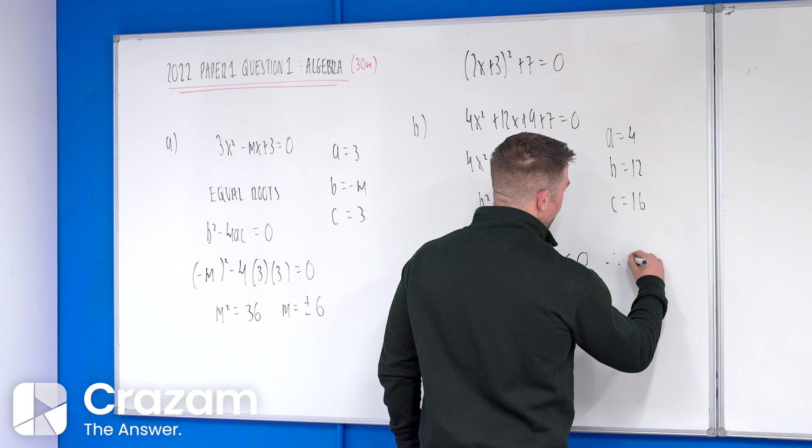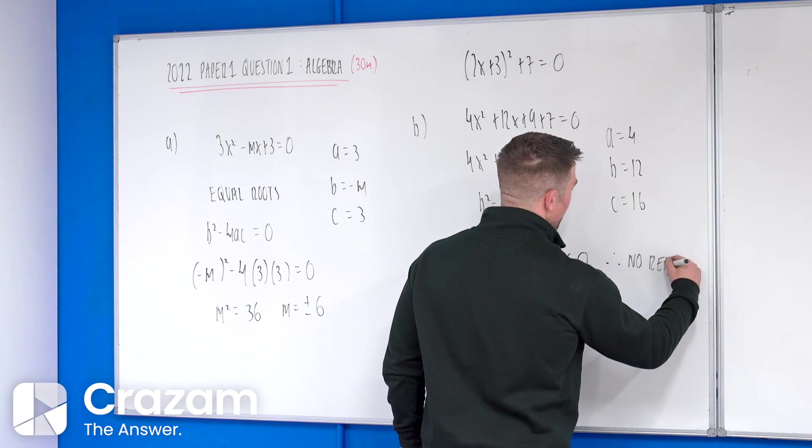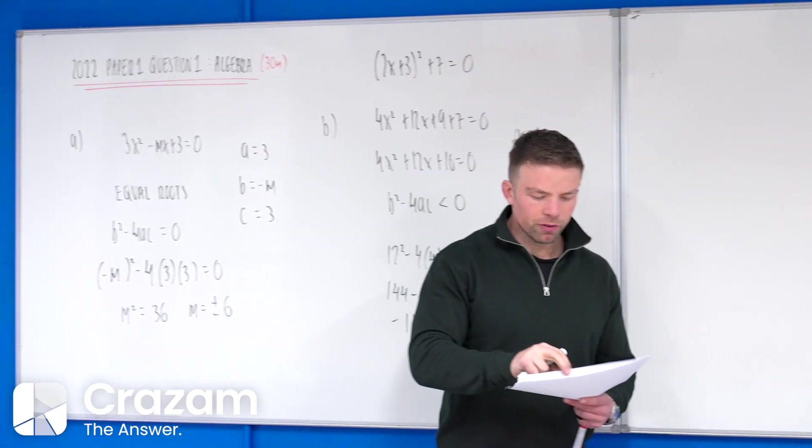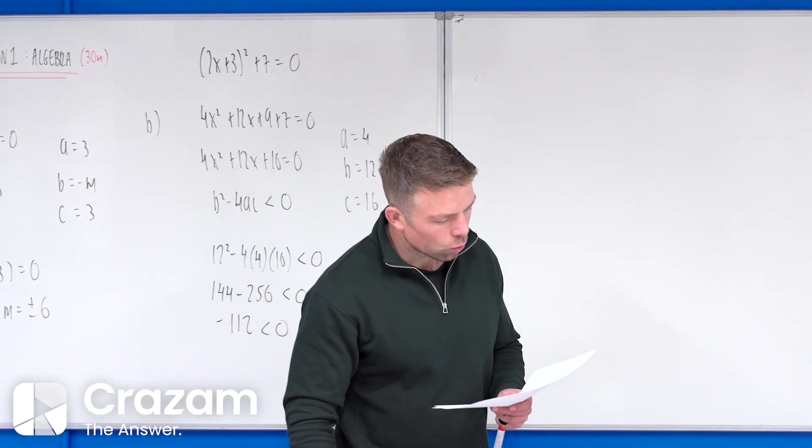that proves, therefore, that it has no real roots. And definitely say that part at the end for the examiner. Perfect. So that's part B. If we go on to C part 1,